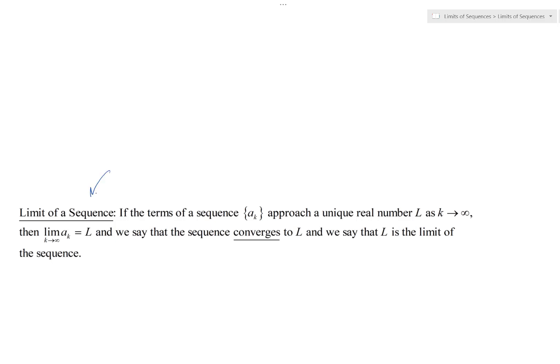The limit of a sequence: if the terms of the sequence a_k approach a real number L as the number of terms k goes to infinity, then we say the limit as the index k goes to infinity of the sequence a_k equals the unique real number L, and we say that the sequence converges to L. L is the limit of the sequence.